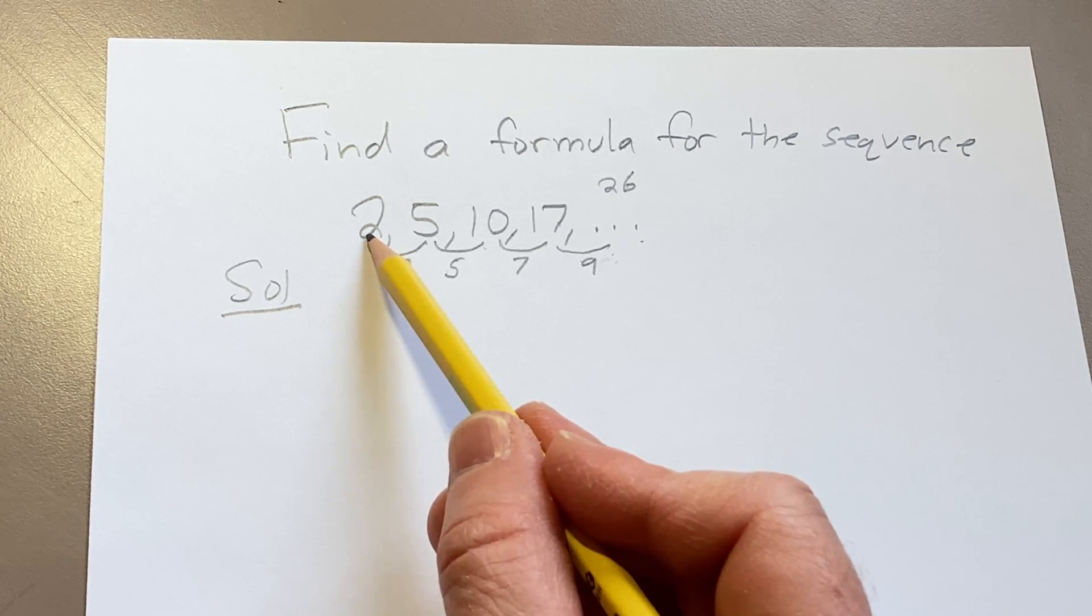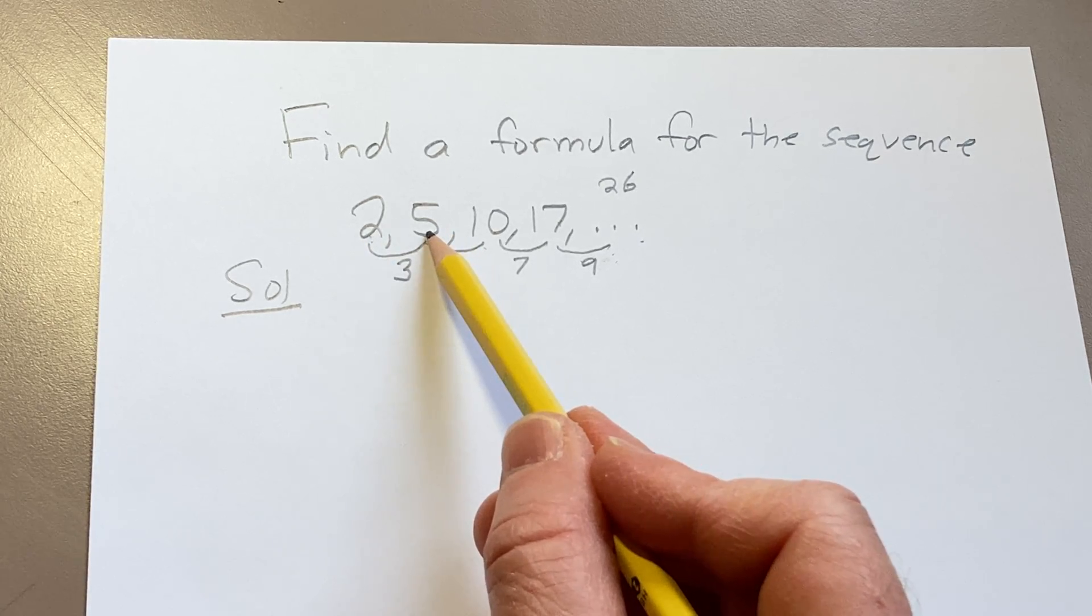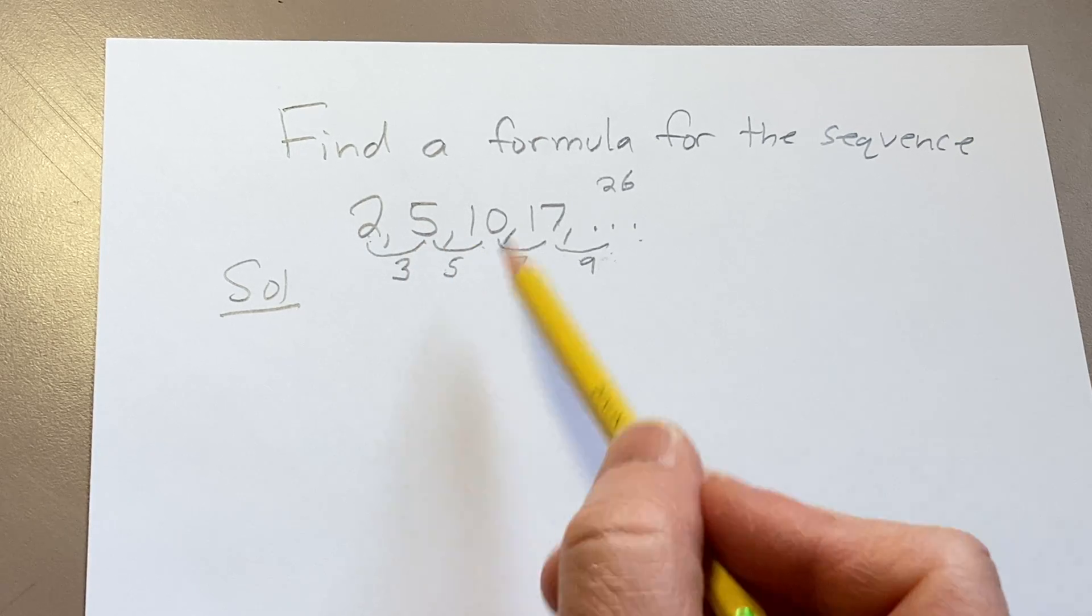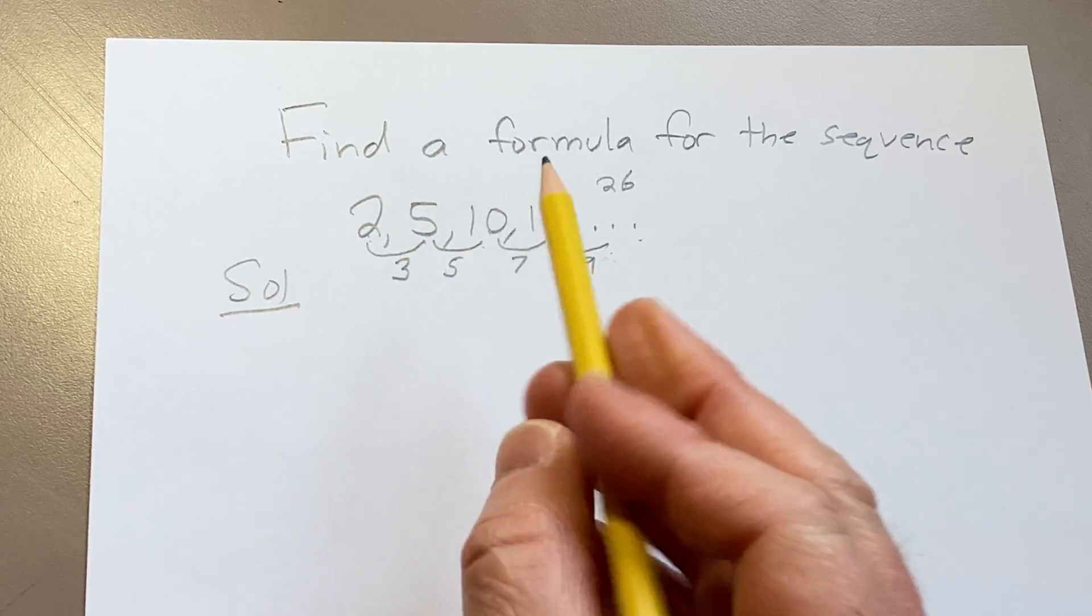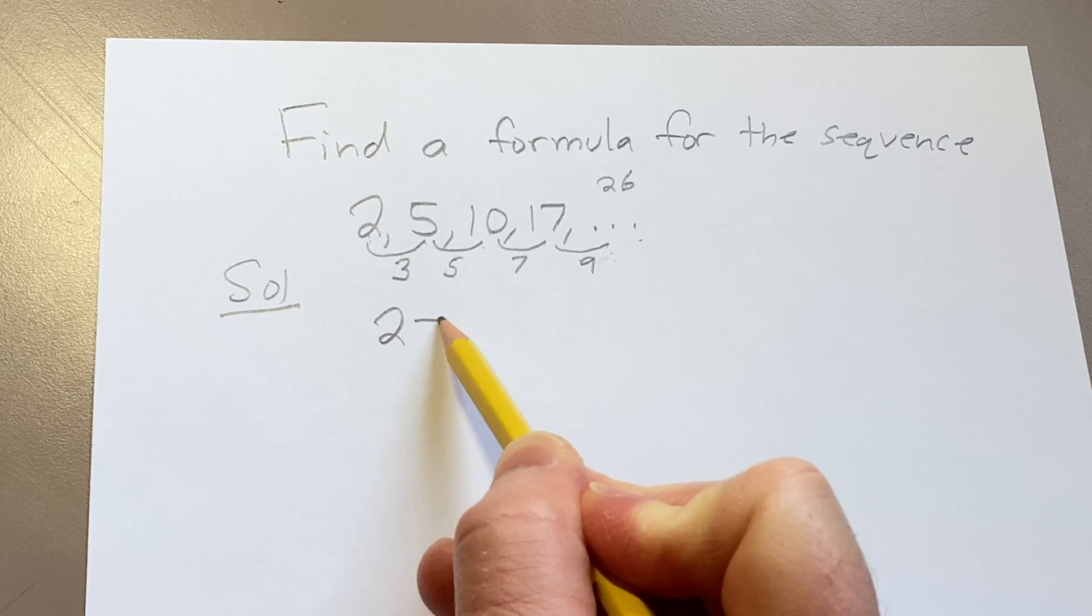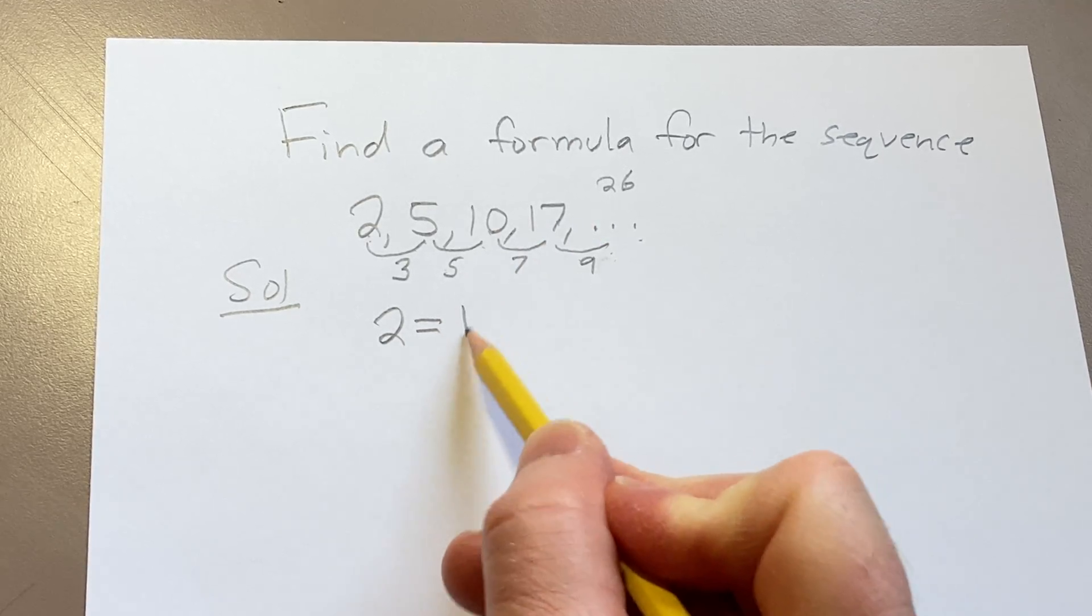we can realize that this number here is 2 squared plus 1. This number here is 3 squared plus 1. So 2 is equal to 1 squared plus 1.